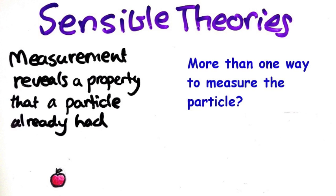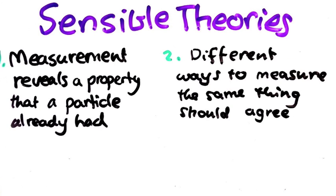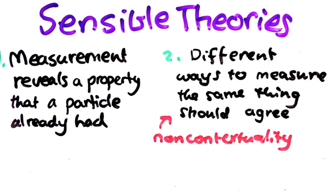But what about the case where there's more than one way to measure the spin of a particle? Another sensible criteria is that different ways to measure something should agree. So both those measurements should give the same answer. We'll call this non-contextuality, because the result of the measurement shouldn't depend on the experimental context.